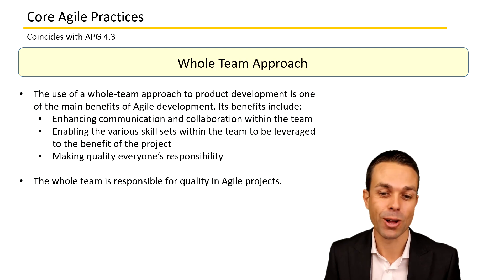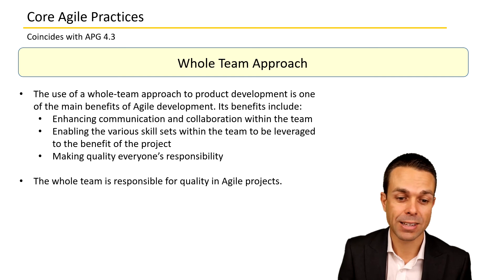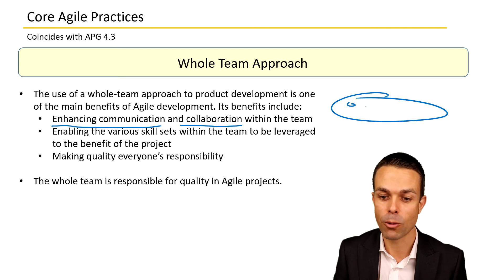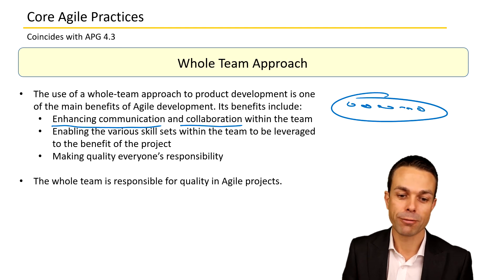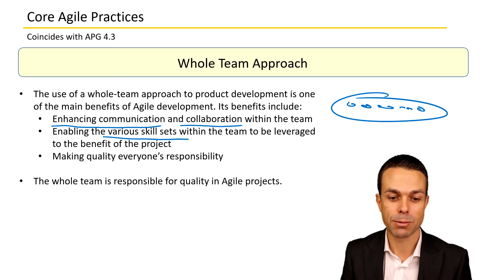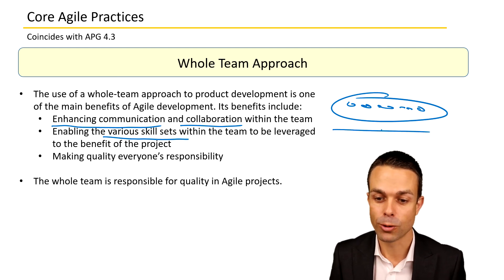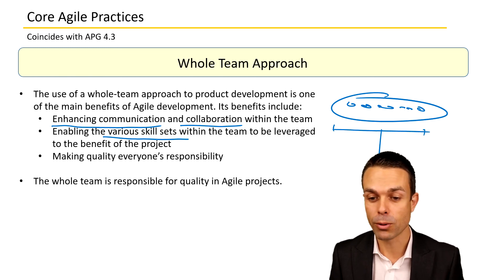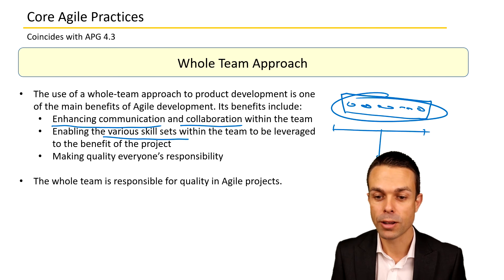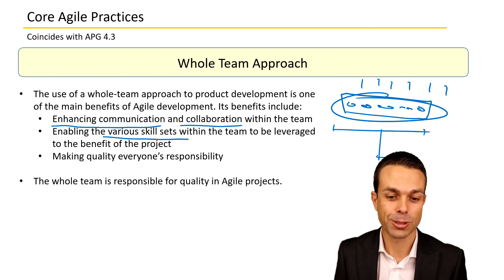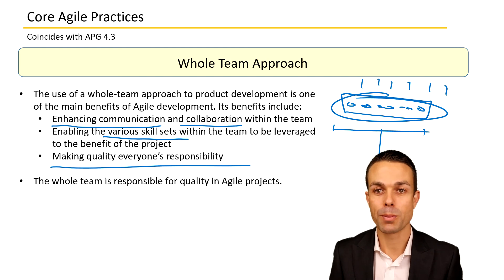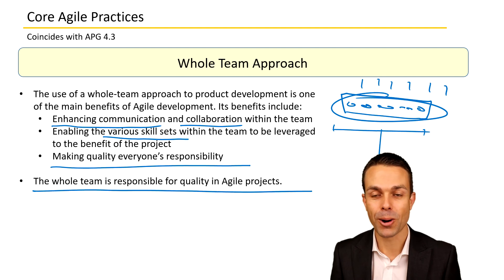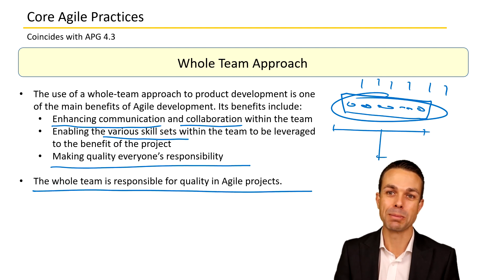There are many benefits to the whole team approach. We're enhancing communication and collaboration because everyone is in one place. We're enabling various skill sets to be leveraged for the project — the T-shaped generalizing specialists together in one team, not siloed in their departments. And because we have everyone together, we're making quality everyone's responsibility. The whole team is responsible for quality on agile projects. That is the whole team approach.